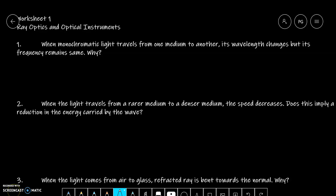Question number 1 says, when monochromatic light travels from one medium to another, its wavelength changes but its frequency remains same. Why? When monochromatic, it means single frequency light, let's suppose it is single color. I have yellow color light. It is one medium to another medium. Its wavelength changes but its frequency is the same. Why?